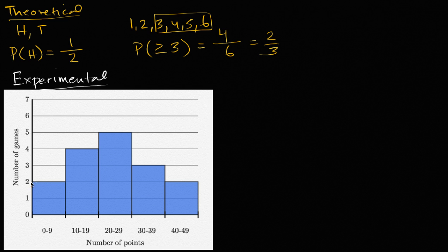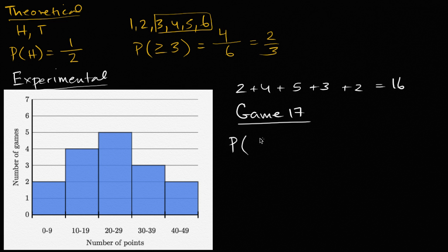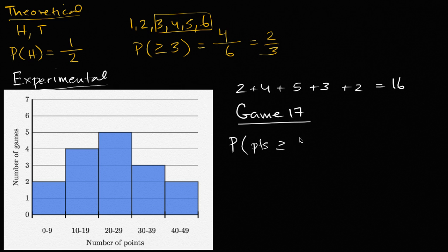For your next game, let's count how many games you've had so far: two plus four plus five plus three plus two equals 16 games so far this season. For game 17, you want to figure out what is the probability of scoring — your points are greater than or equal to 30.